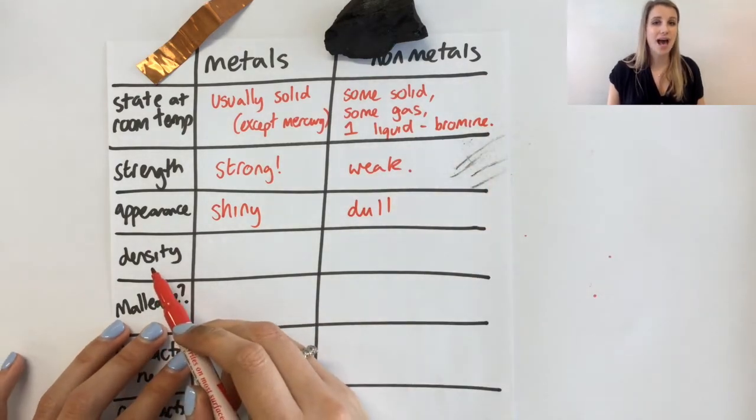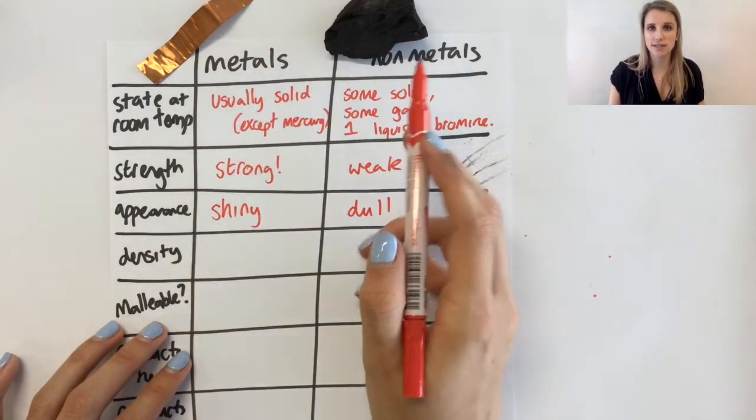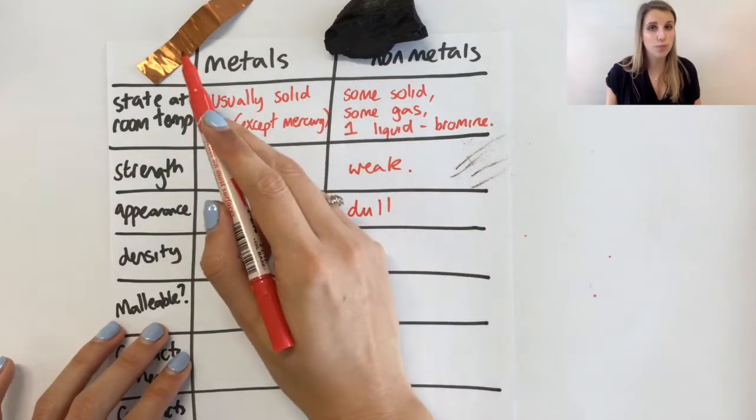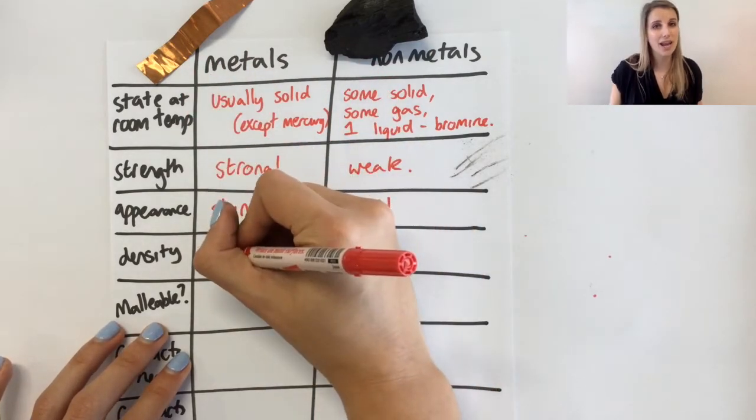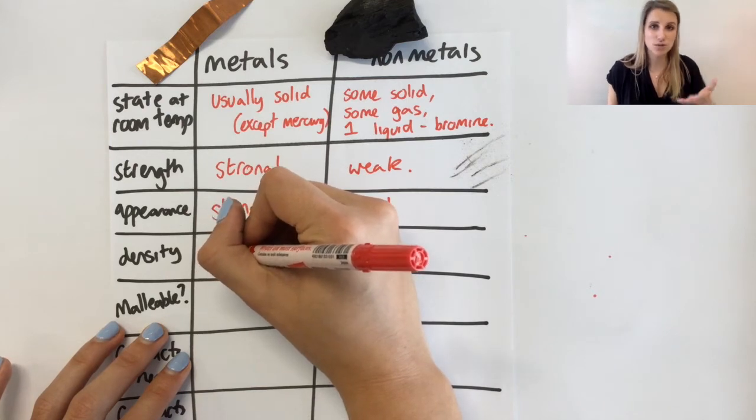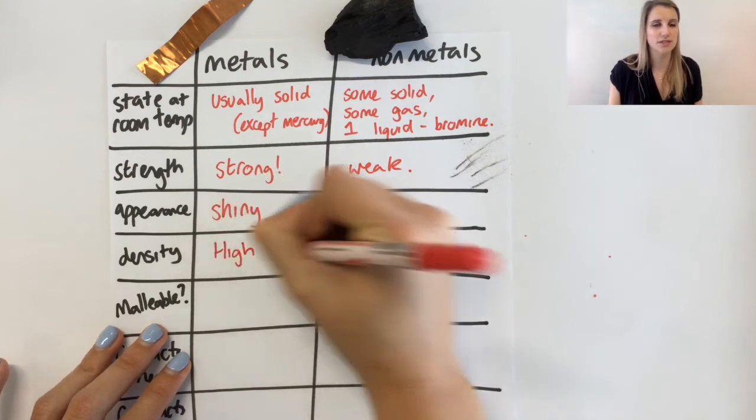Density means how heavy is it for its size. The metals are super heavy for their size. Whereas the non-metals are actually quite light for their size. Metals are heavy based on how much you have of the substance.